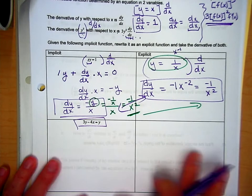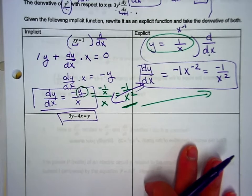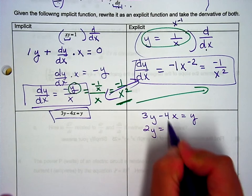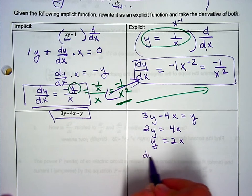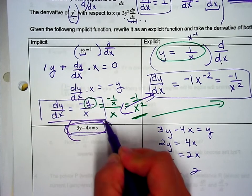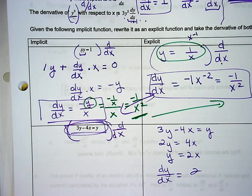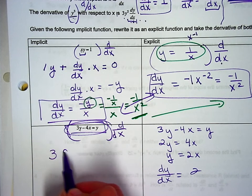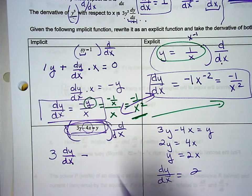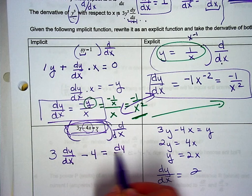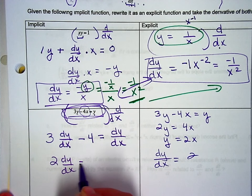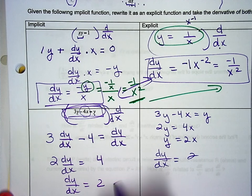Let's take a look at one more. This is a linear equation: 3y minus 4x equals y. Writing it explicitly — subtract the y over and move the 4x — so y is really 2x. The derivative dy/dx is 2; this is just a line. Now let's do the same thing implicitly. Taking the derivative with respect to x of both sides: the derivative of y is dy/dx, not 1. So 3 dy/dx minus 4 equals dy/dx. Solving for dy/dx — move the dy/dx term over to get 2 dy/dx, move the 4 over, divide out the 2. It is the exact same answer.